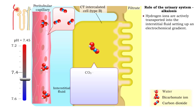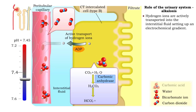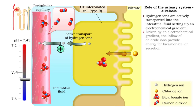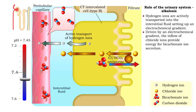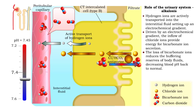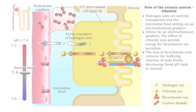Hydrogen ions are actively transported into the interstitial fluid, setting up an electrochemical gradient. Driven by an electrochemical gradient, the reabsorption of chloride ions replaces bicarbonate ion reabsorption when blood is alkaline. The loss of bicarbonate ions reduces the buffering reserves of body fluids, decreasing blood pH back into the normal range.